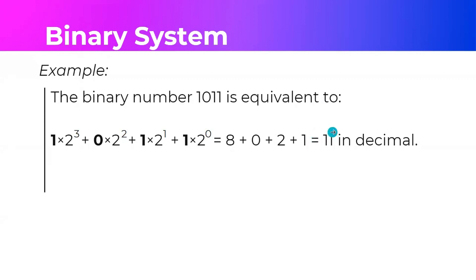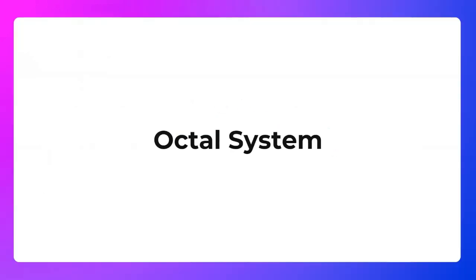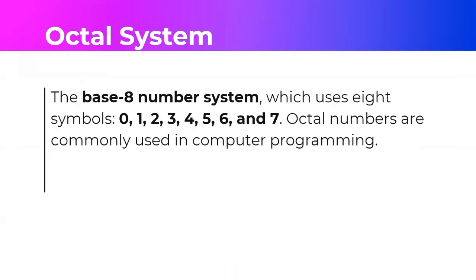So 1011 binary or base 2 is equivalent to 11 base 10 or decimal. Now let's have the octal system. Octal is the base 8 number system, which is represented by 8 symbols starting from 0, 1, 2, 3, 4, 5, 6, and 7. Octal numbers are commonly used in computer programming.